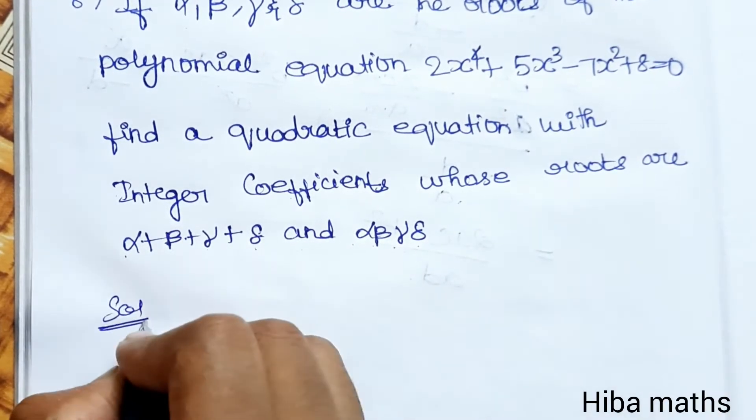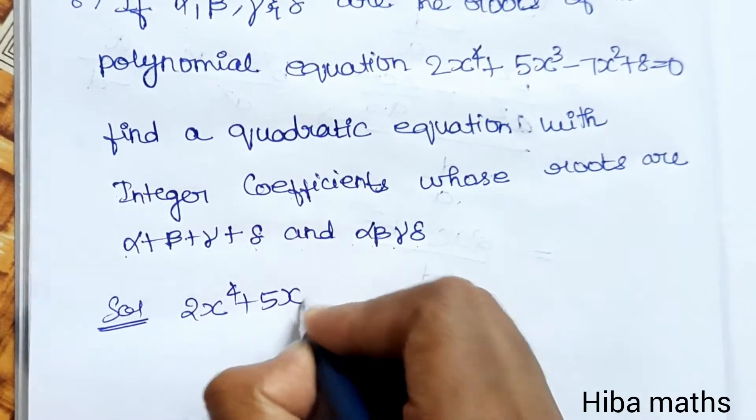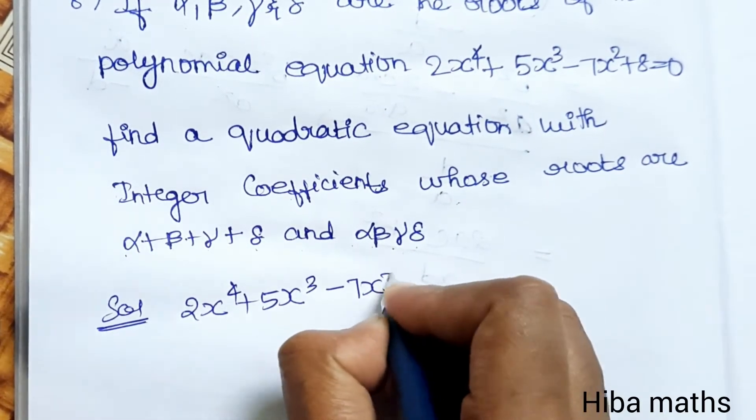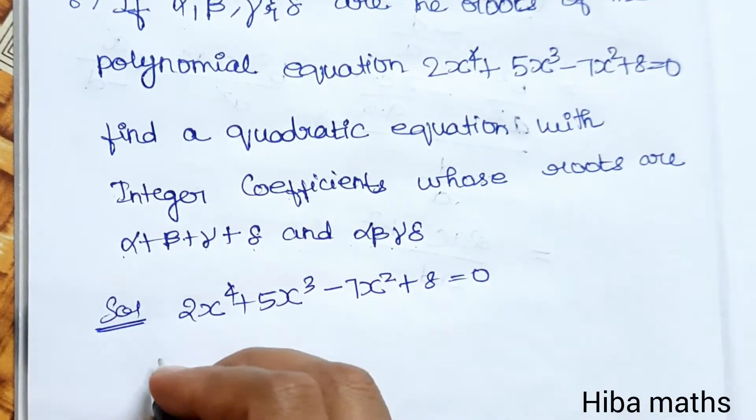Solution: Given equation 2x⁴ + 5x³ - 7x² + 8 = 0. So identifying coefficients: